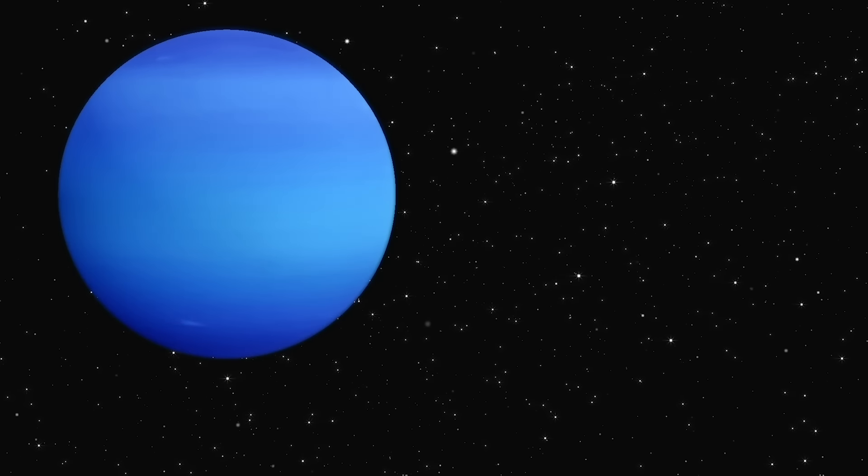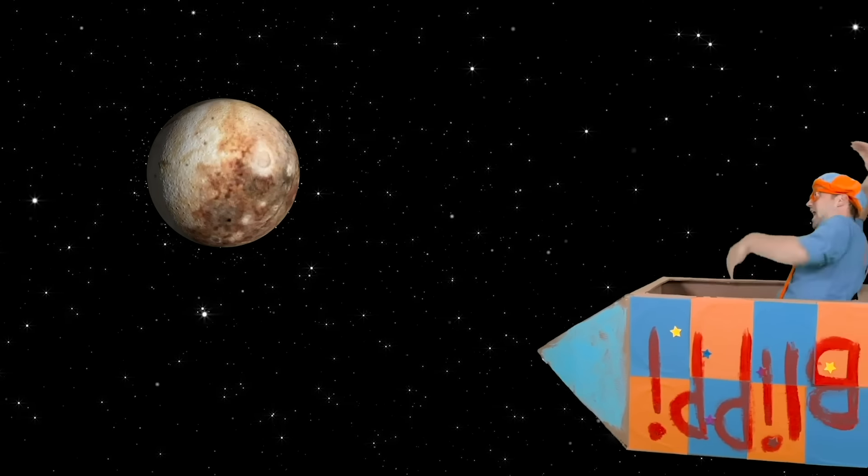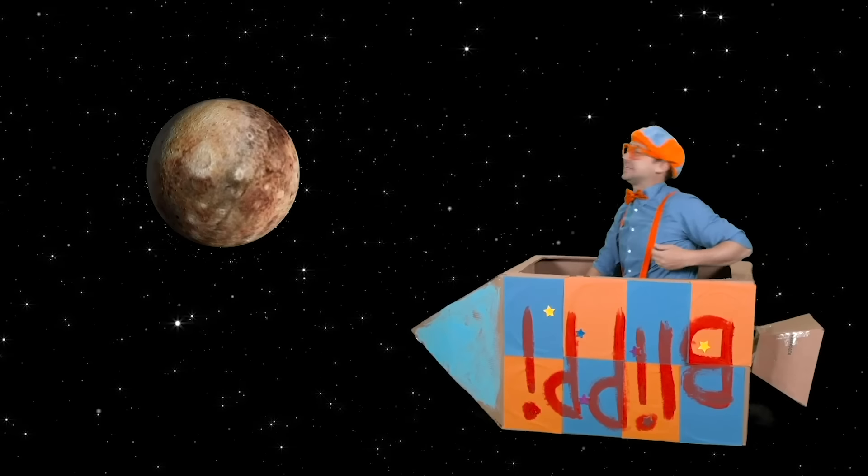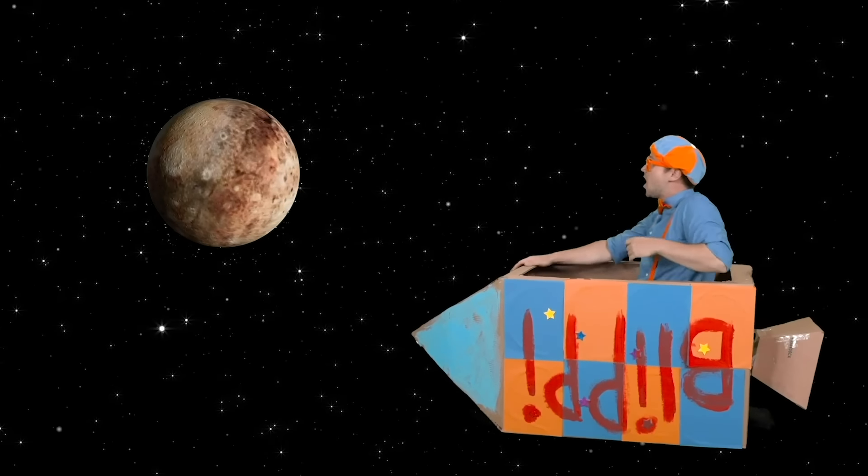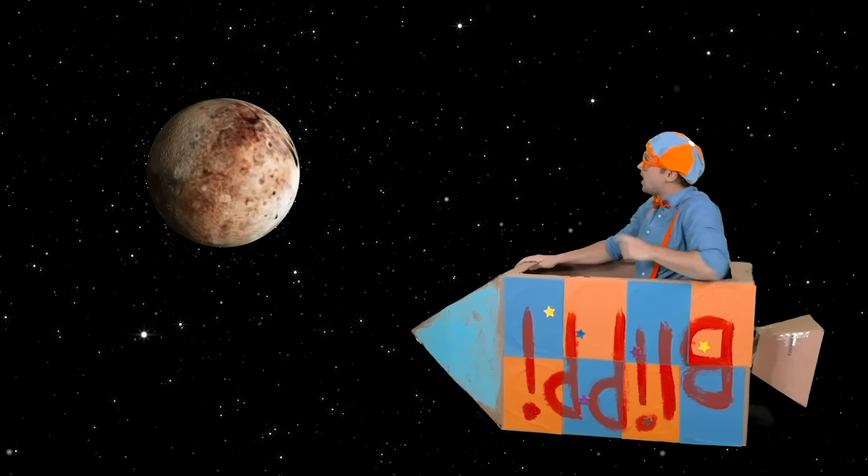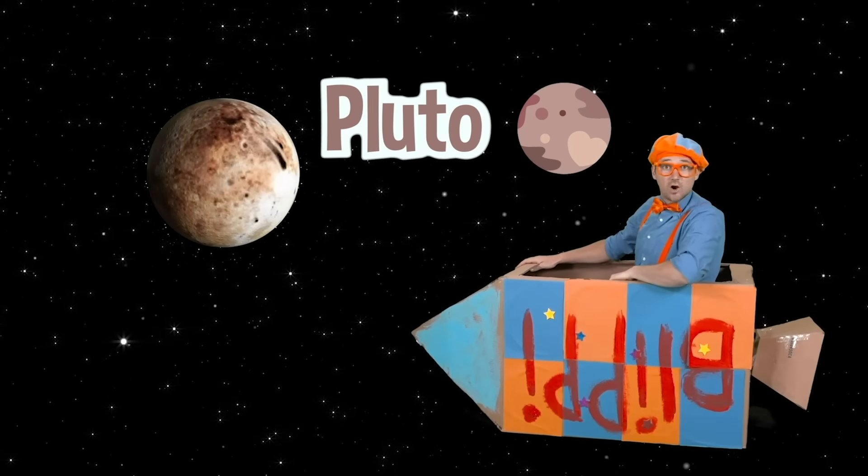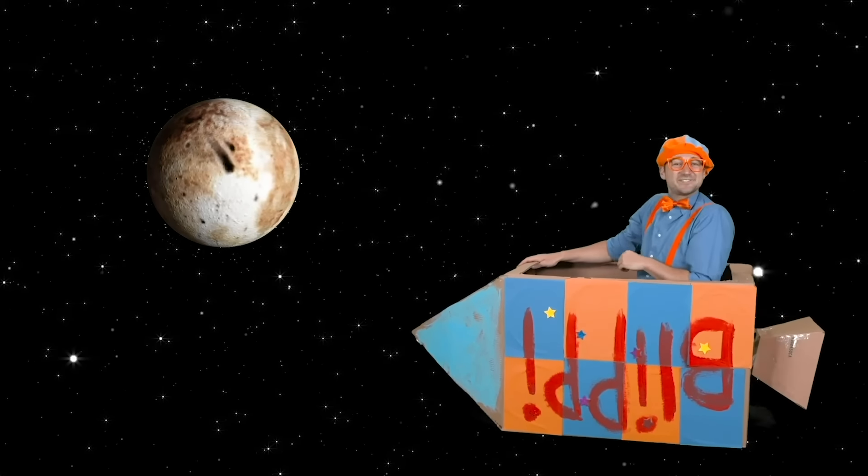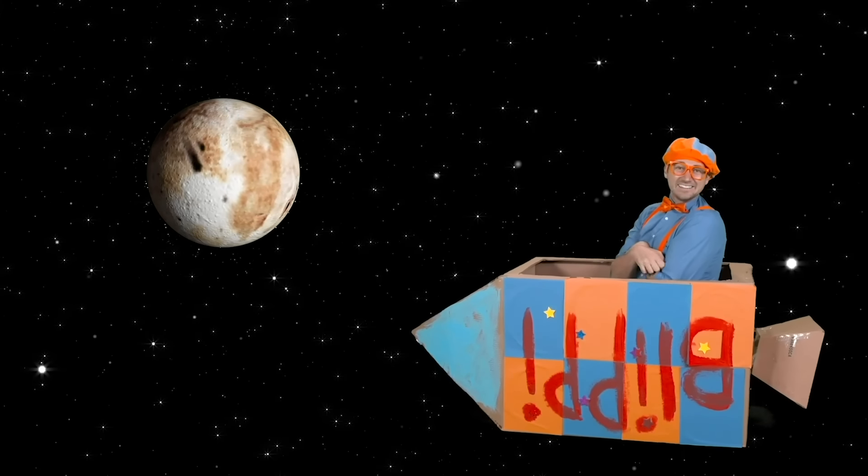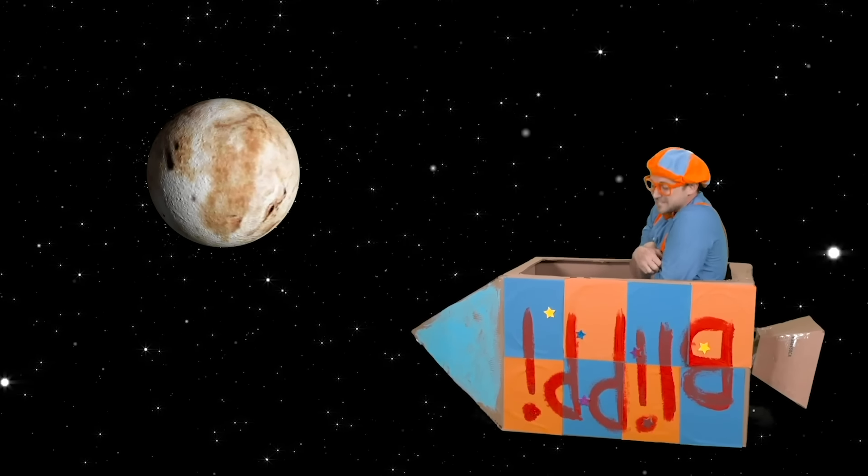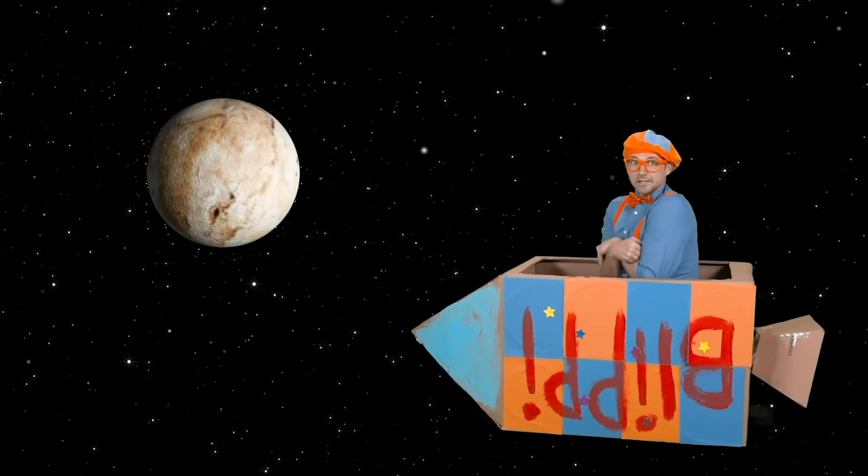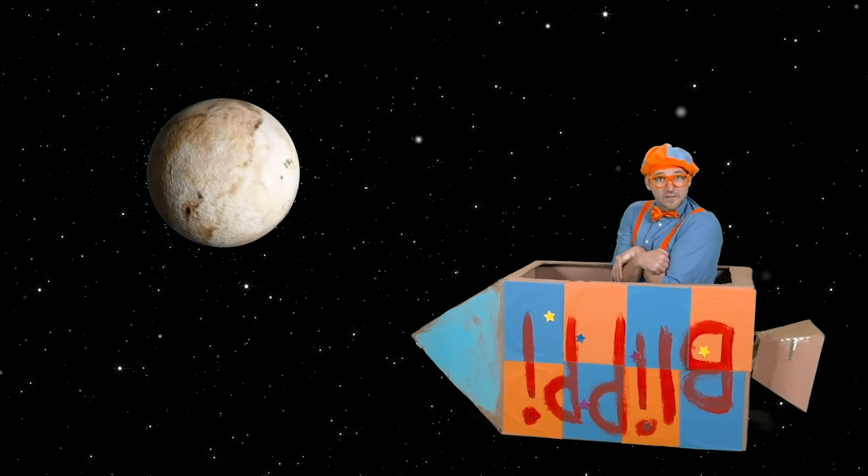The last planet of our solar system! Look at it! It's really small! That is Pluto! It's so small it's a dwarf planet! Wow! And it's really cold! I love Pluto! It's really chilly out here though! Let's turn around and count all of the planets! Shall we?